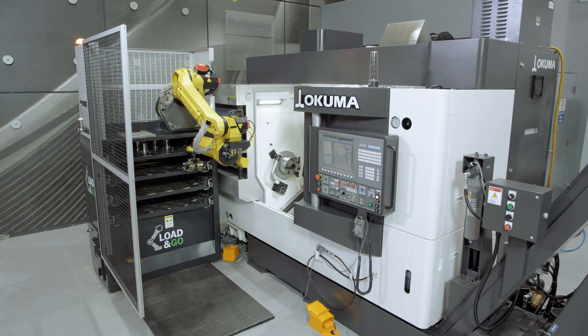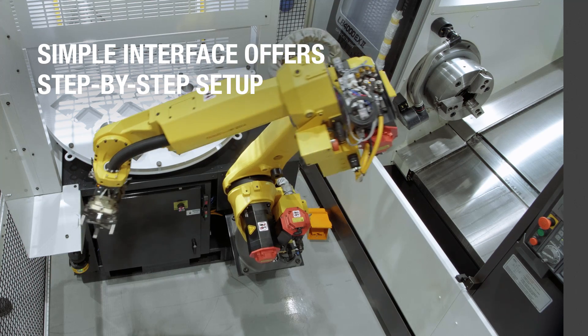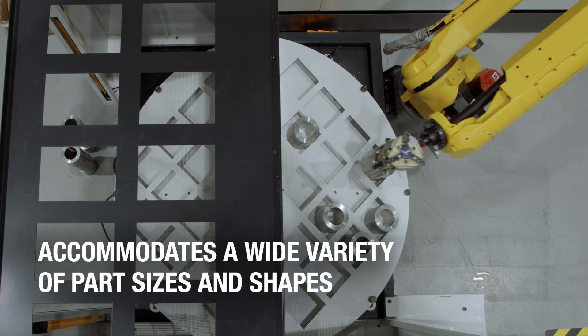Efficiency and utilization are top of mind for every modern manufacturer, which is why robotic tending solutions like the simple yet versatile Load & Go are so popular.